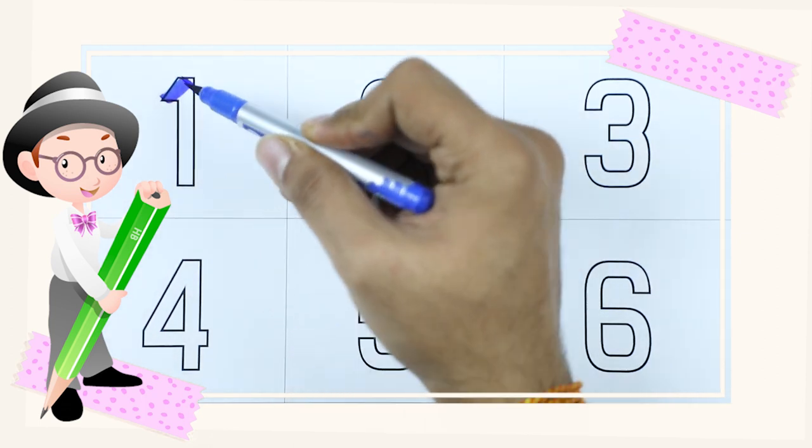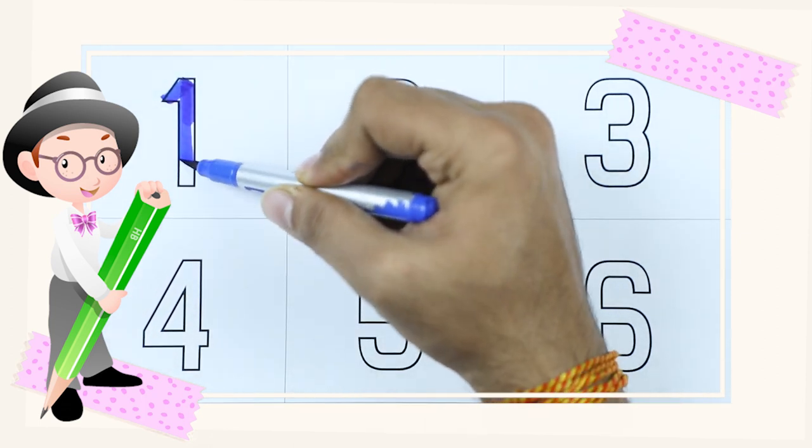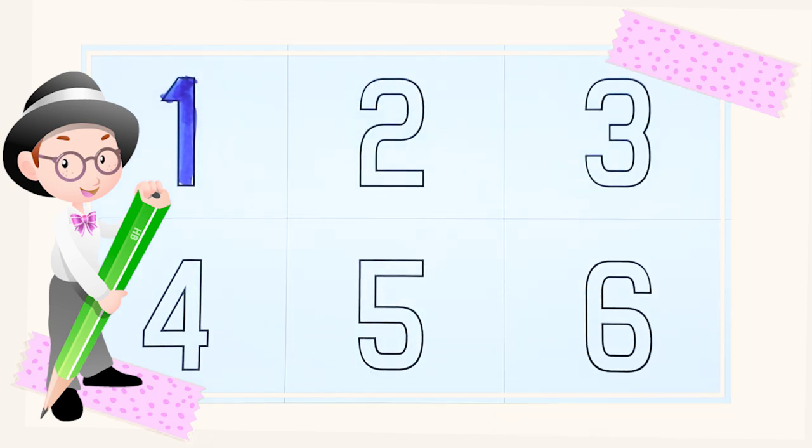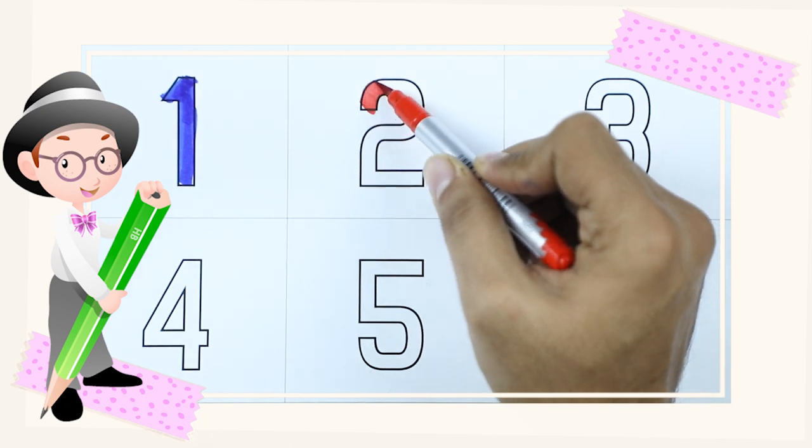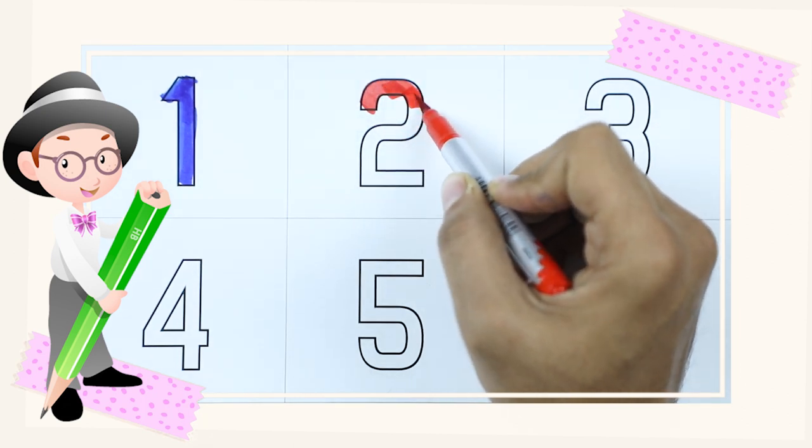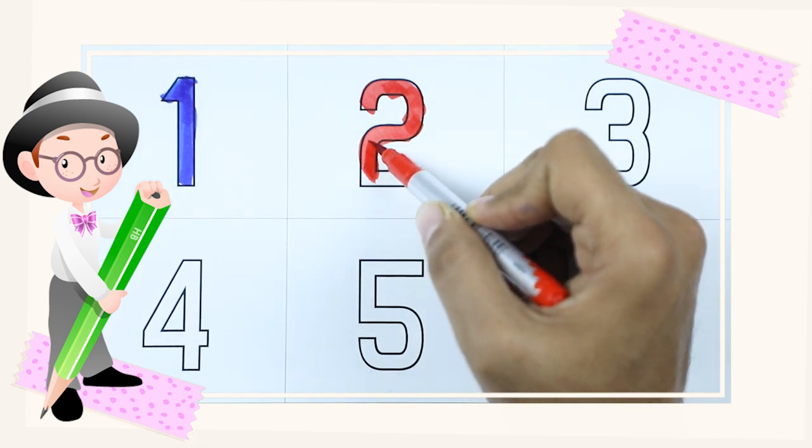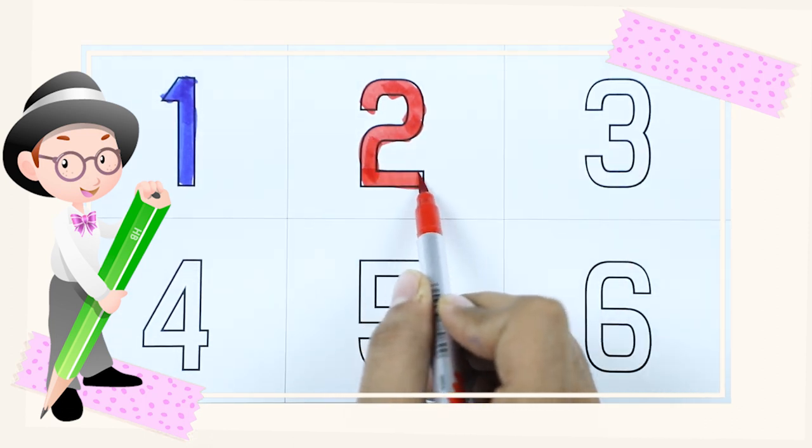Number 1. It's number 1 with blue color. Number 2 with red color. It's number 2.